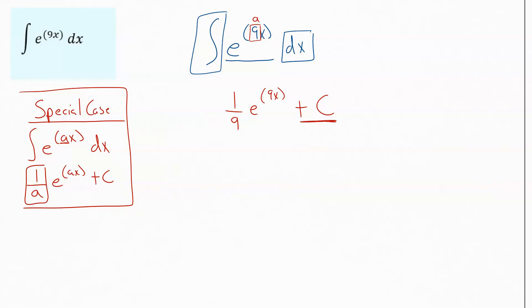So we just track the fact that there could have been a constant there by always putting this plus c. So that our antiderivative, our indefinite integral for this problem looks like that.